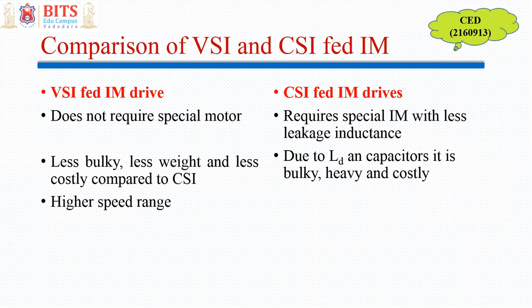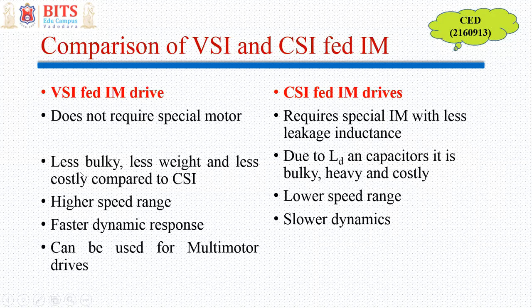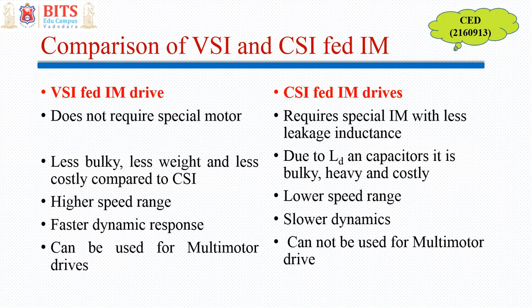VSI-fed induction motor drives have a higher speed range while CSI-fed have a lower speed range. Dynamic response is faster in VSI-fed drives while it is slow in CSI-fed drives. VSI-fed drives can be used for multi-motor drives while CSI-fed cannot — you need a separate CSI-fed inverter for each motor. In summary, for low and medium power applications VSIs are used, while for very large power ratings we generally go for current source inverter-fed induction motor drives. That's all for this particular topic.